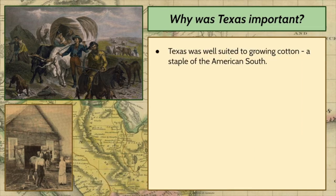First of all, Texas was well-suited to growing cotton. Cotton was very important in the American South. It was the main cash crop Southerners grew, and slave labor was used to grow and cultivate cotton. For those reasons, Southerners really had their eyes on Texas.